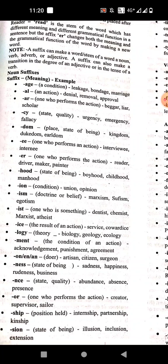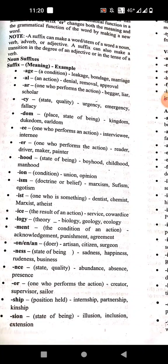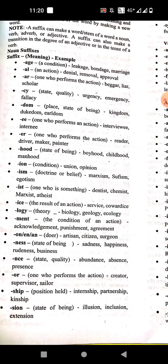The suffixes '-on', '-an', '-en' mean doer. Examples: artisan, citizen, surgeon. Then '-ness' means state of being. Examples: sadness, happiness, rudeness, business.